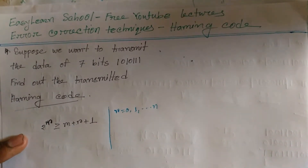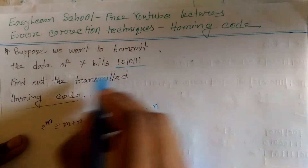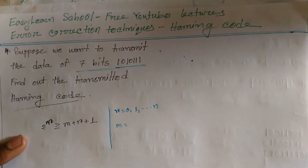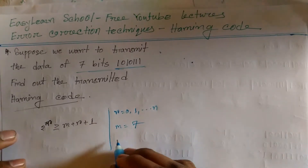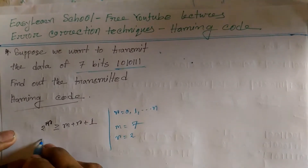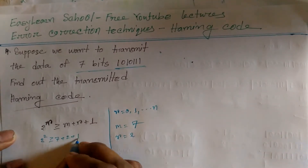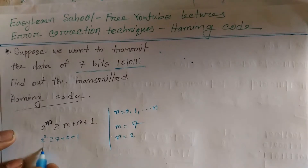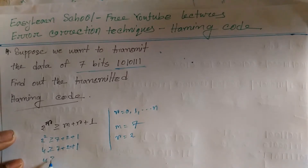So the redundant bits r will be different, and m will give us a digit. So we will send the data with the redundant bits. Suppose we have r redundant bits, then 2 to the power r must be greater than or equal to m plus r plus 1, that is 7 plus 2 plus 1, meaning 7, 8, 9, 10.